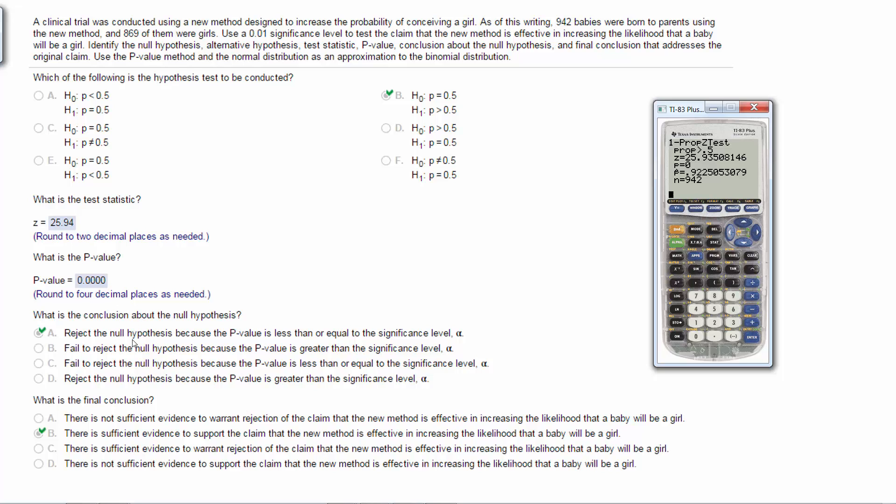let's go look through the conclusion. So we're gonna reject the null hypothesis because the p value of 0 is less than 0.01. So definitely there's sufficient evidence to support the claim that the new method is effective in increasing the likelihood that a baby will be a girl because this is such a high test statistic here, okay? Which basically says our probability is very low. I mean, it's basically zero.